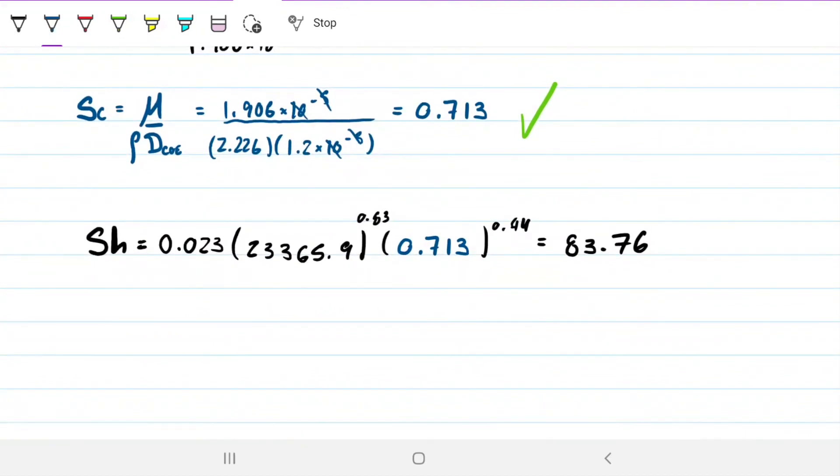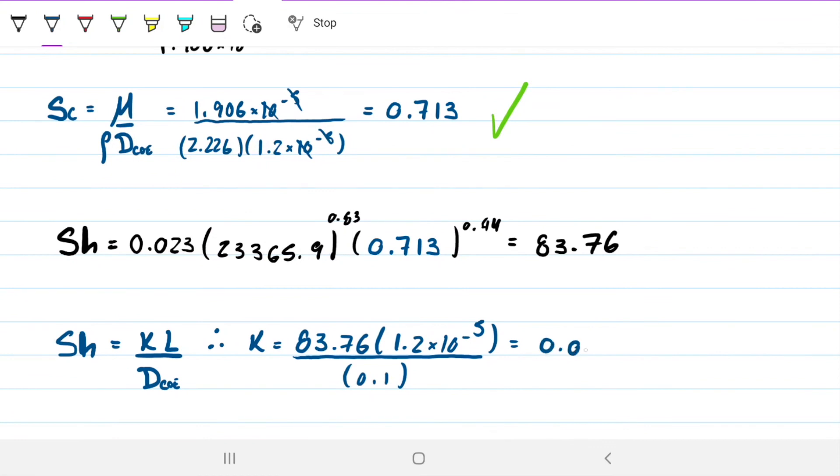And now this is the last part, which we're looking for, if you recall, the whole thing was to find K. And K is related to Sherwood. That was the whole drama. And this is characteristic length over diffusivity. Again, this is diameter in our case. So that would be, if I want to find K, I just need to do 83.76 times 1.2 times 10 to the minus 5. And our characteristic length, which is our diameter, which is 0.1 meters. So K is 0.01. And units for K are the same for velocity. So this is our answer for question 2.